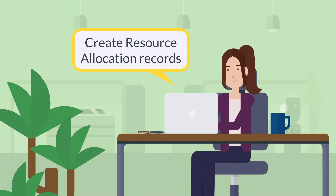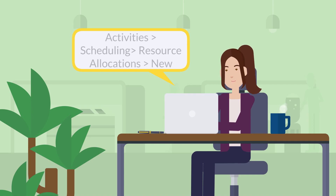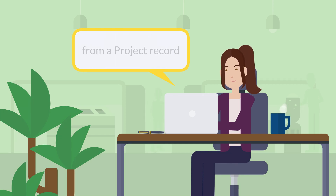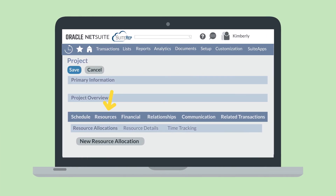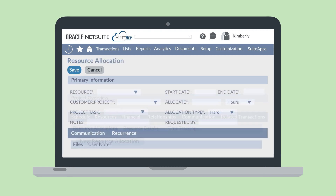Once this feature is enabled and all relevant employee records have been updated, you'll be able to create resource allocation records. You can create one by navigating to Activities > Scheduling > Resource Allocations > New, or alternatively, directly from a project record by navigating to the Resources tab and clicking the New Resource Allocation button under the Resource Allocation subtab.